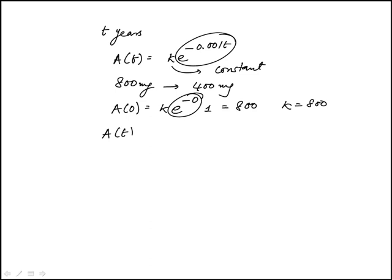So our function is A(t) is 800 times e to the power of minus 0.001t. We want to find the time, this value, when it's down to 400 or half.